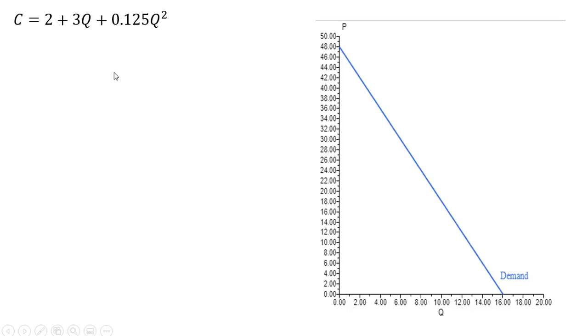So let's take our cost equation and derive marginal cost from it. Marginal cost is the derivative of the cost equation with respect to Q, the quantity of output. The derivative of 2 is 0. The derivative of 3Q is 3. And the derivative of this last term, we're going to take 2, multiply it by 0.125. That gets us 0.25. And then we're going to subtract 1 from that exponent, leaving us with just Q.